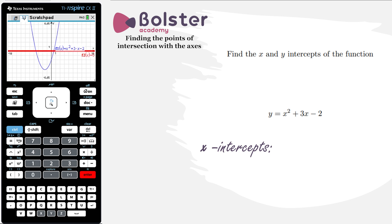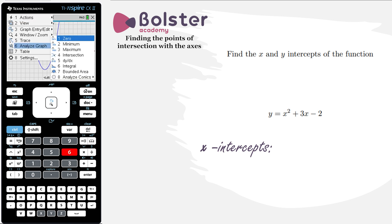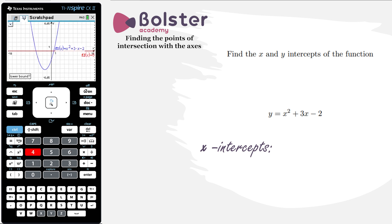Up pops the second graph, this one in red, and I can clearly see where these two graphs cross each other. If I do an intersection of these graphs, this will be the point that I'm looking for. So analyze graph, option 4 intersection, choose my lower and upper bounds, and I get my point of intersection.